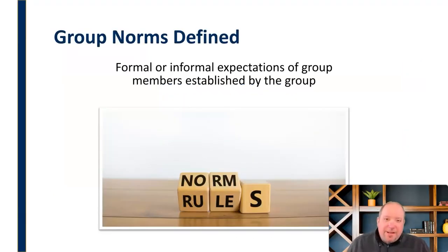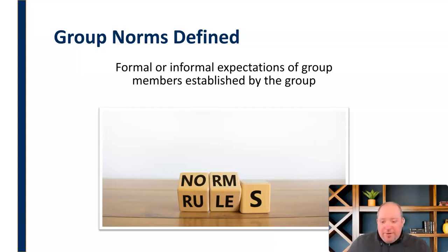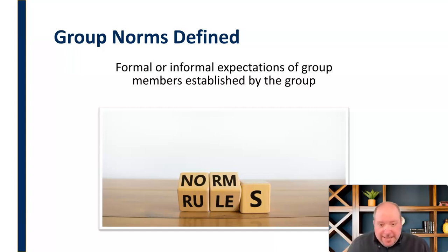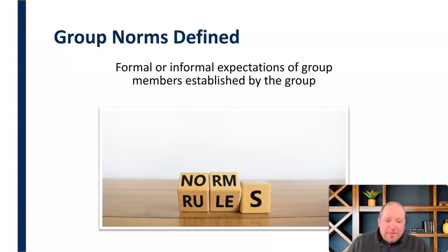In order to do that, let's define group norms. What do we mean by group norms? Well, norms very simply are formal or informal expectations of group members that are established by the group. These can be things that are explicit rules in the employee handbook or written down in your group charter, or they can just be things you notice everybody else is doing without having laid down some explicit rule. It could be informal like that, or just a social norm influencing the group.